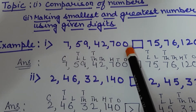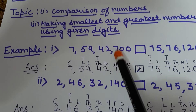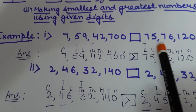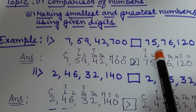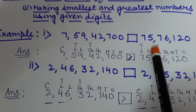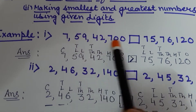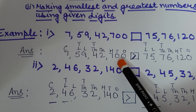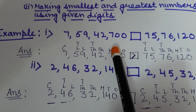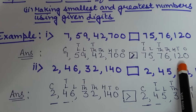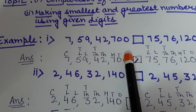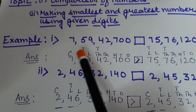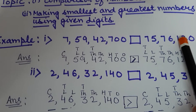Suppose this number is given and you have to compare it with this number. For doing any sum, please focus on their places. Write down these numbers, and the first step is to write down the places on each digit in both numbers. Start from here: ones, tens, hundreds, thousands, ten thousands, lakhs, ten lakhs, and crores.